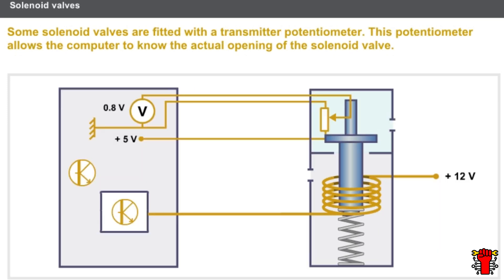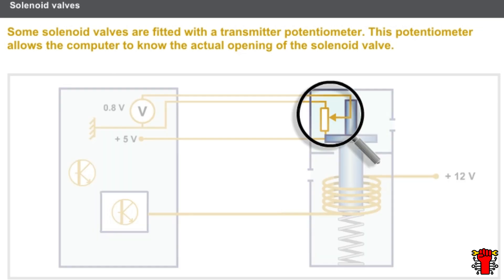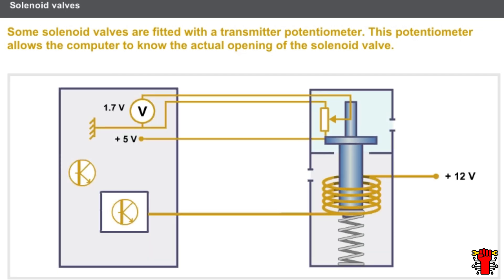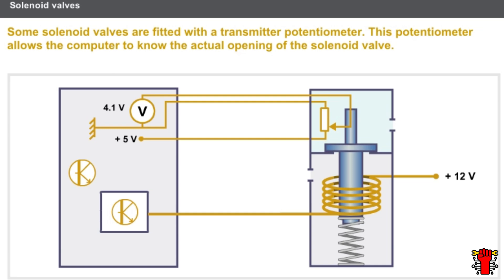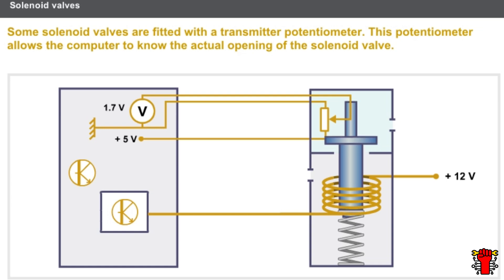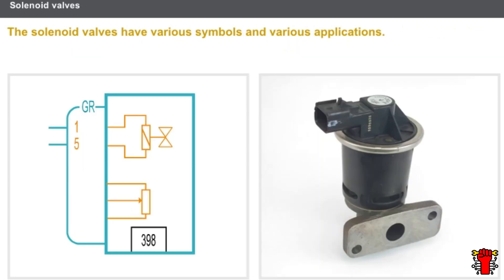There exists a more complex type of solenoid valve fitted with a transmitter potentiometer. This potentiometer is integral with the check valve and allows the computer to know the actual opening of the solenoid valve. The computer can thus adjust the signal to obtain the desired opening. Solenoid valves have various symbols and various applications.